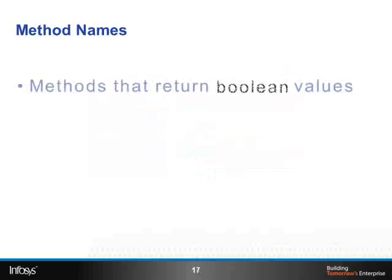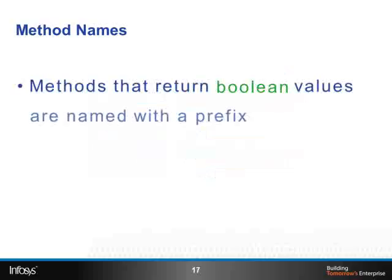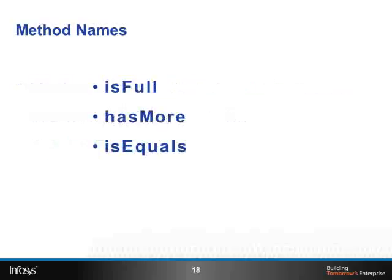Methods that return boolean values are named with a prefix is or has to make it more readable. Isful, hasmore, and isequals are examples.